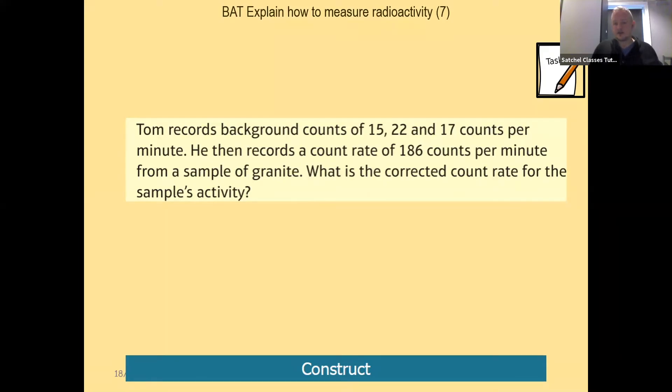Then we've got a count rate of 186 counts per minute from the sample. So the first thing we have to do is work out what is our actual background and how does that affect our count from the sample? The background's present at all times.